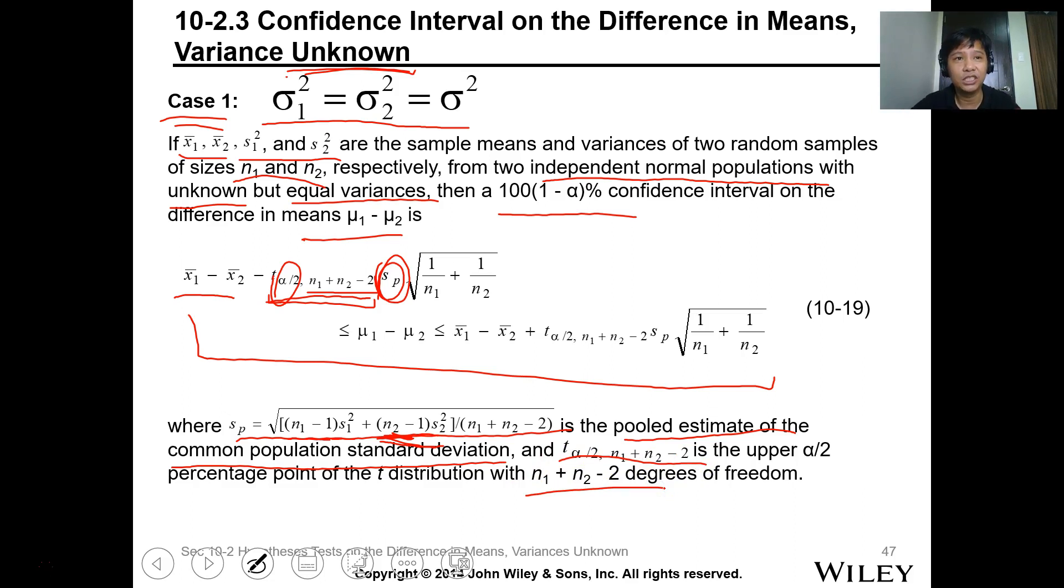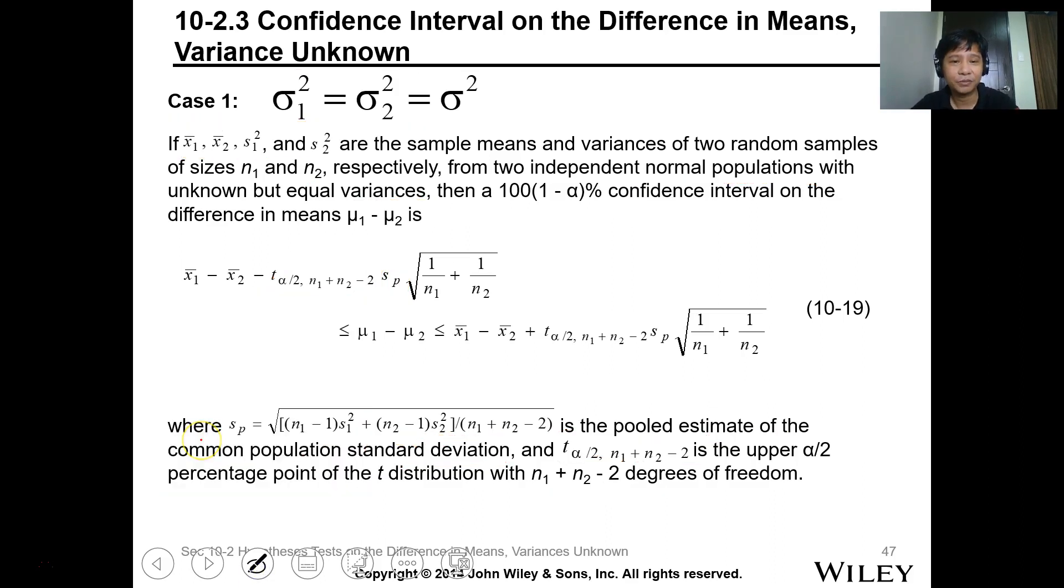So basically it's like the geometric mean of your variance, and this one is the t-value where n2 plus n1 minus 2 is degrees of freedom. We used the t-table last time for single mean or single population. So we multiply with the square root of 1 over n1 plus 1 over n2, and take note this is the upper percentage point.